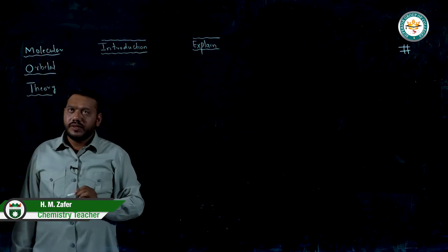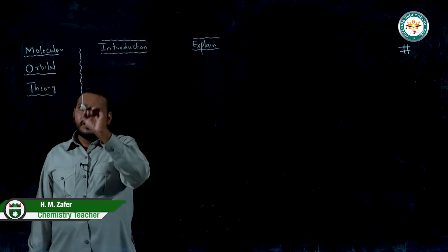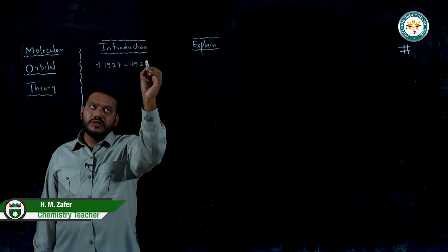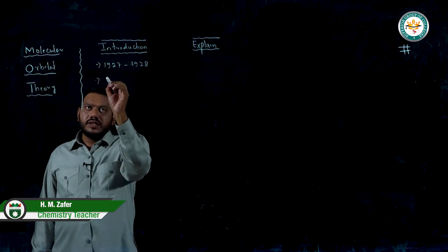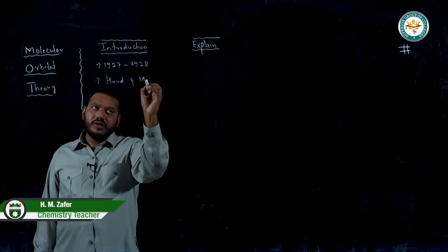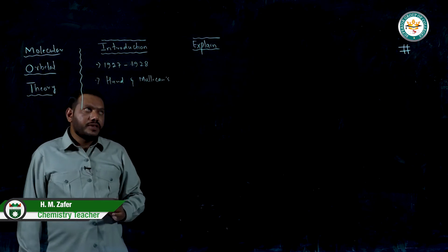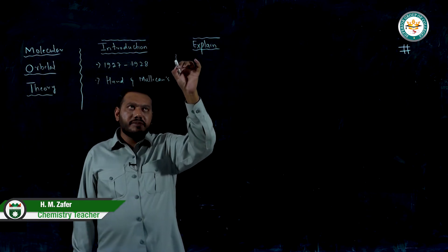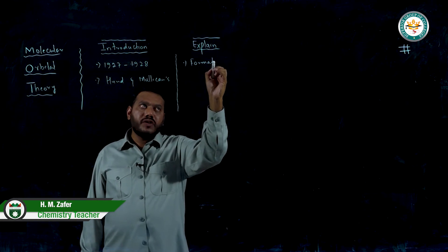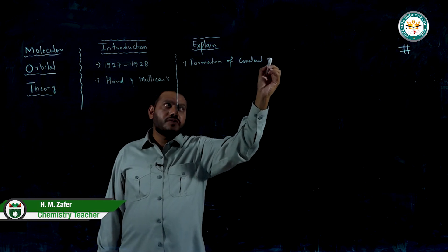This is a very important topic in FSC chemistry. First, we will see the introduction. In 1927 and 1928, two scientists — Hund and Mulliken — proposed this theory. This theory explains many important things, including the formation of the covalent bond.